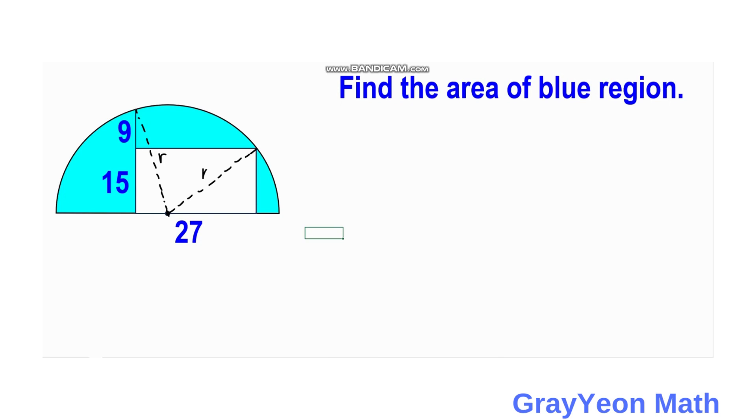So this should be R also because it is the radius. And next is we label this distance as x. And if that is x then this distance should be 27 minus x. And this length should be 15.